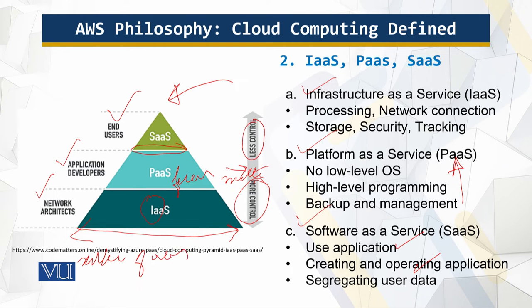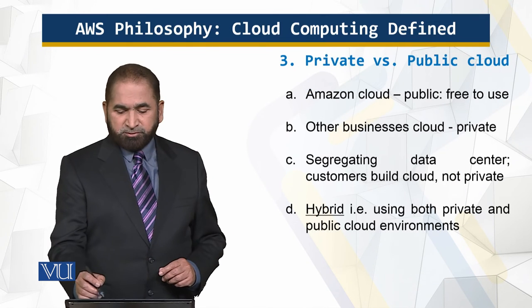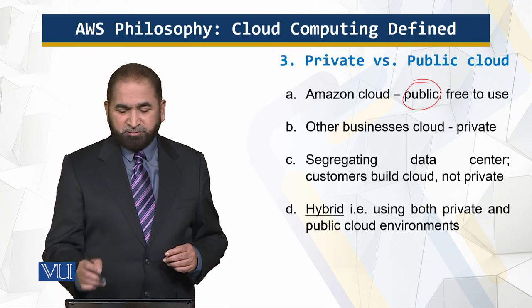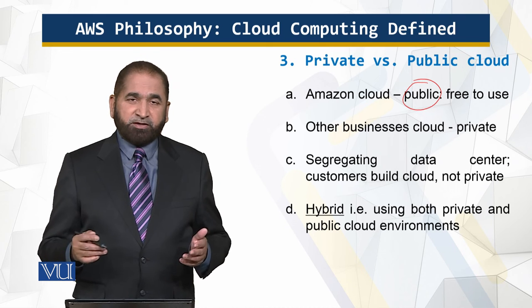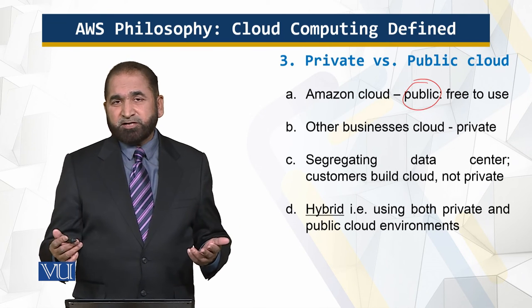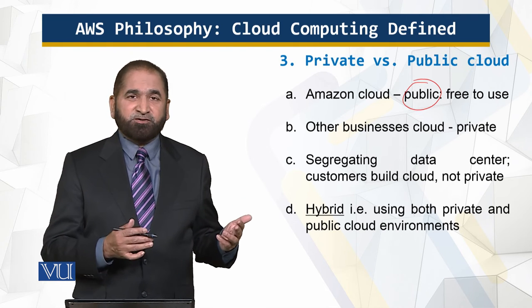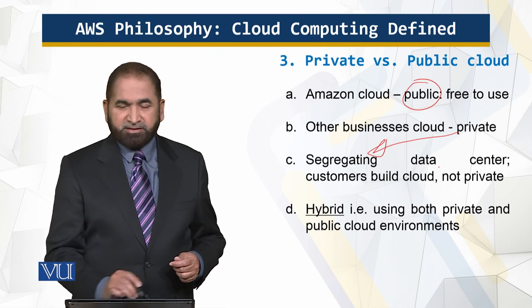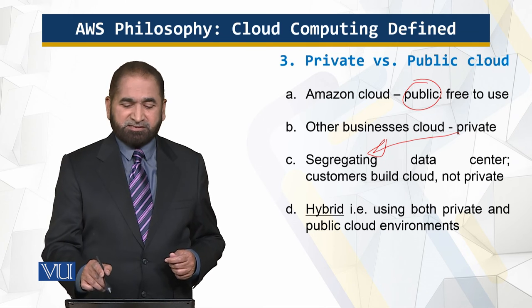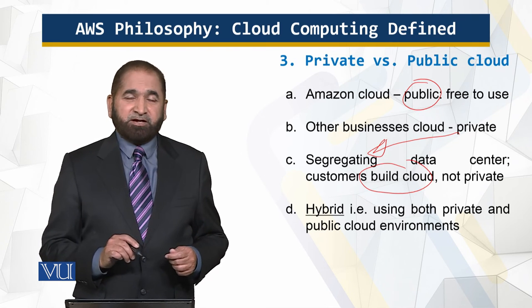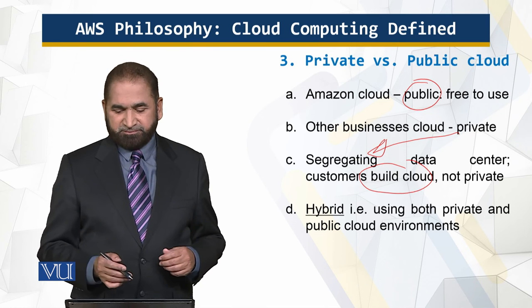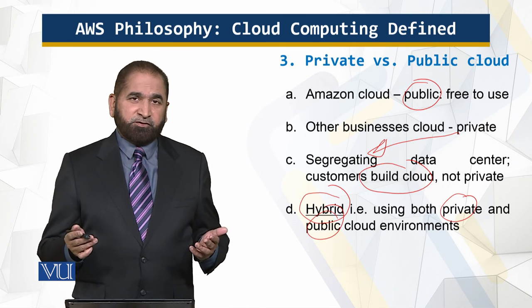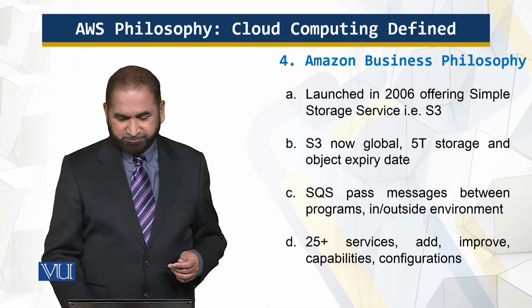Private versus public cloud: Amazon cloud is the public cloud because it is free to use. Other businesses' clouds are private. Amazon could come up with this model because there was no backlog — it was all new. In the private cloud, data segregation at the data center level is done by the customers who build the cloud. There is also a hybrid option using both private and public cloud environments.